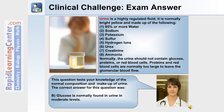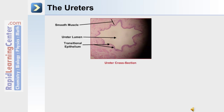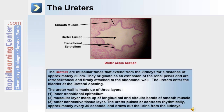Now for the anatomy of the ureter. In this cross-section of a human ureter, you can see the ureter lumen, which is surrounded by a transitional epithelium, which is in turn surrounded by a smooth muscle layer. The ureters are muscular tubes that extend from the kidneys for a distance of approximately 30 centimeters.